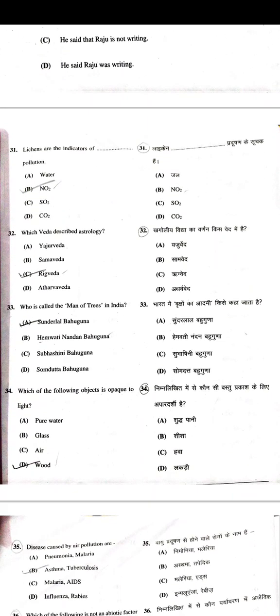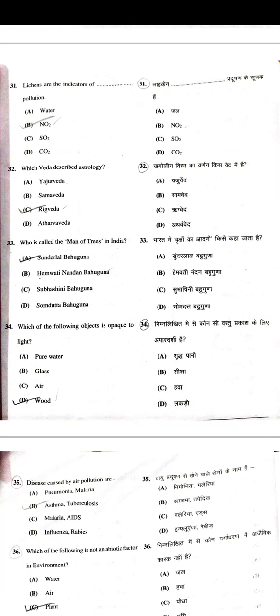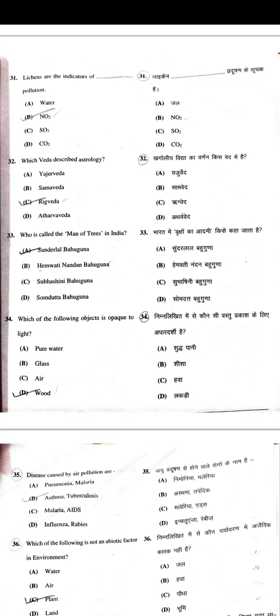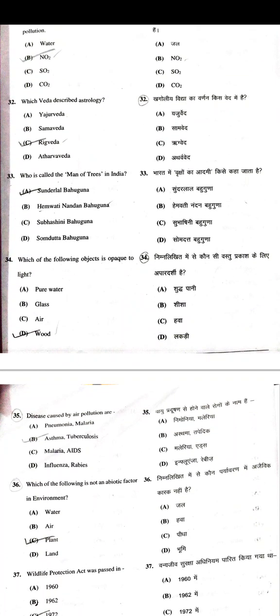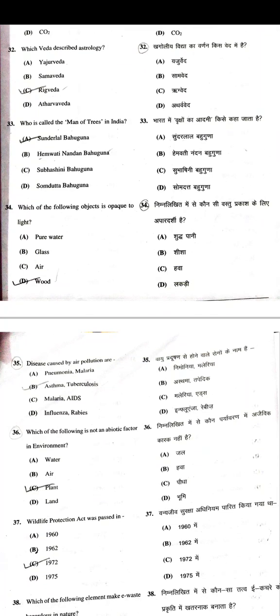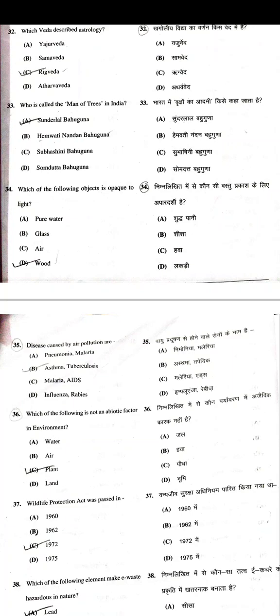Lichens are the indicators of pollution — specifically, they indicate NO2 pollution. Which Veda described astrology — Rig Veda. Who is called the 'Man of Trees' in India — Sundarlal Bahuguna.